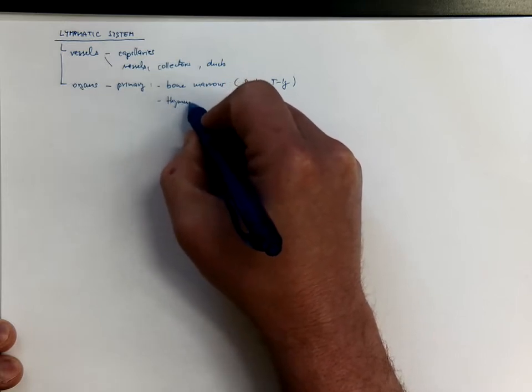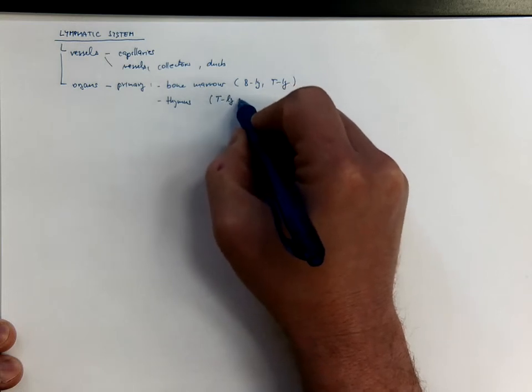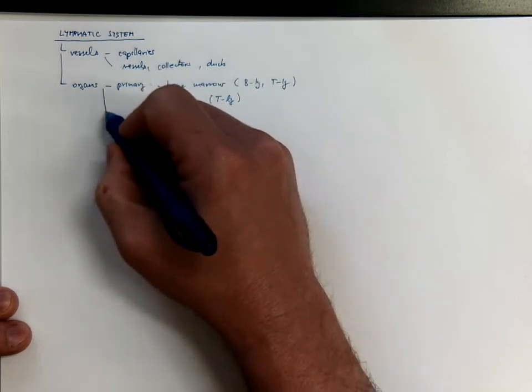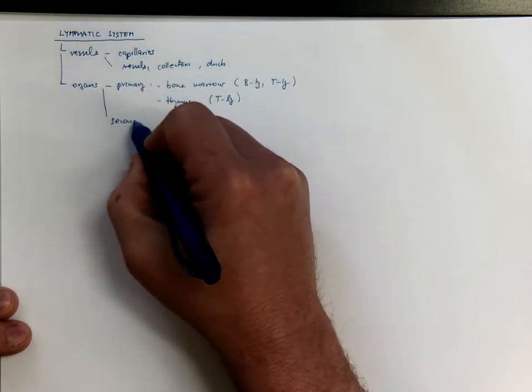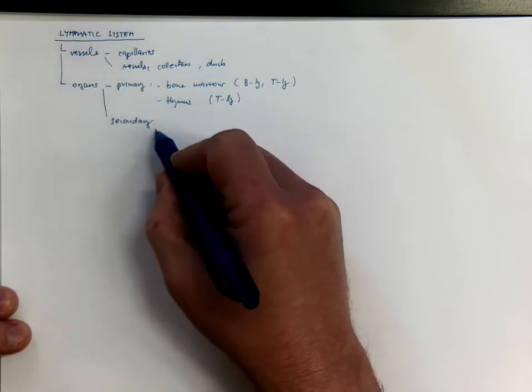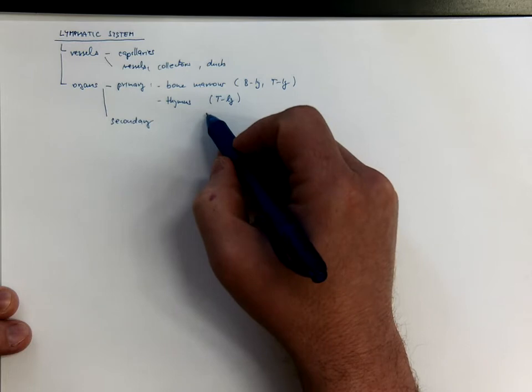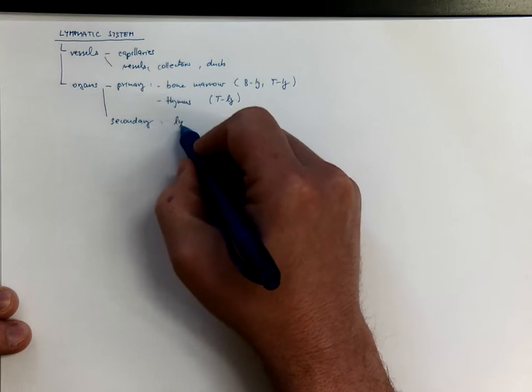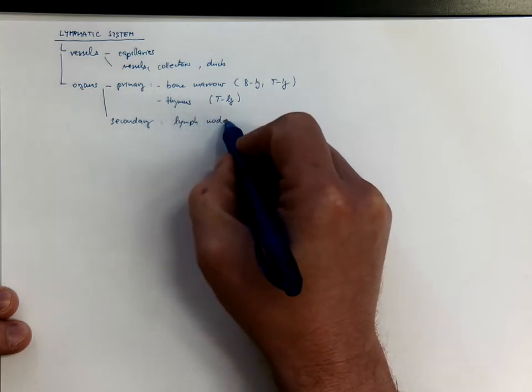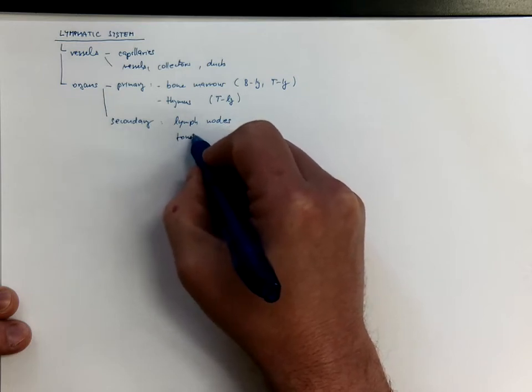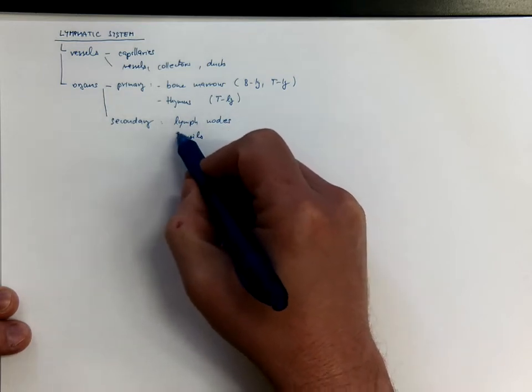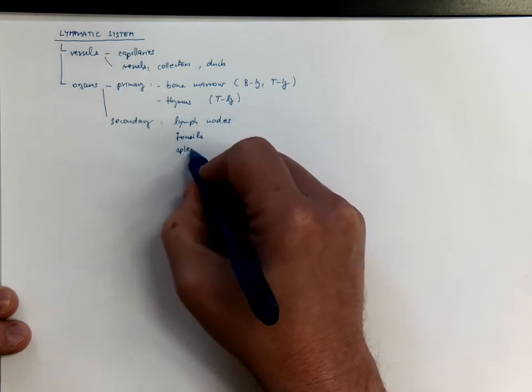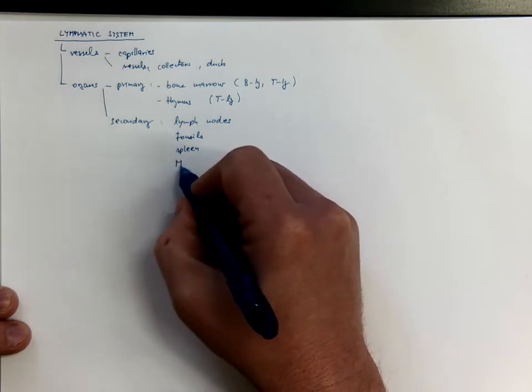That's where T lymphocytes are produced and where they differentiate. All the other lymphatic organs are considered to be secondary which means they are infiltrated by the lymphocytes originating from the primary lymphatic organs. This includes the lymph nodes.